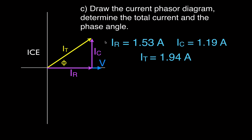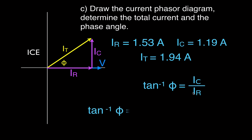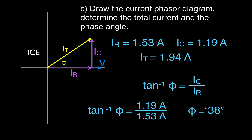We're going to use our trig functions. We know all three sides of our right triangle, and we'll use the tangent, which is opposite over adjacent (SOHCAHTOA). The opposite from this angle is the capacitor current, and the adjacent is the resistor current. So tangent = 1.19 A divided by 1.53 A, and we get a phase angle of 38 degrees. The current leads the voltage by 38 degrees in this circuit.